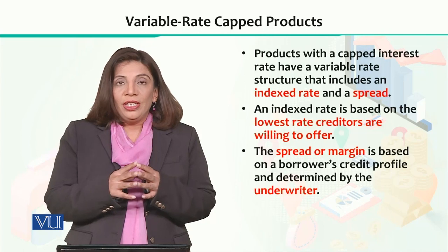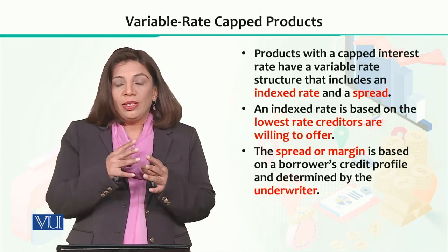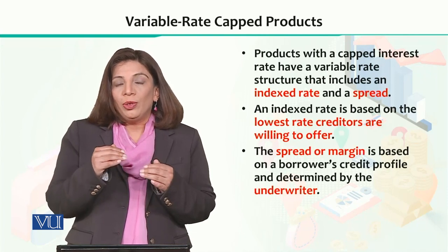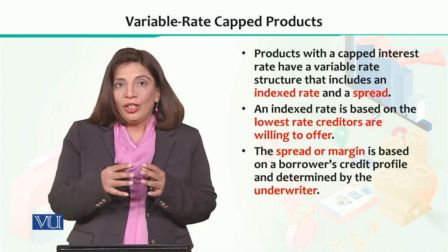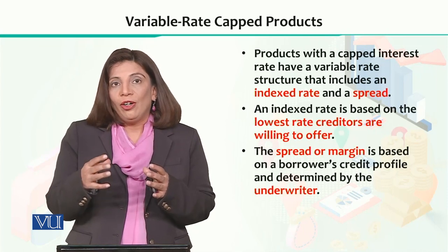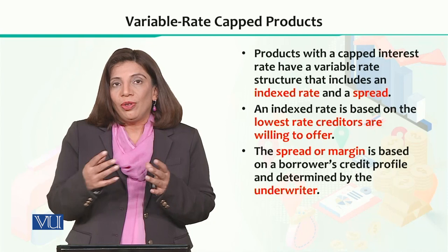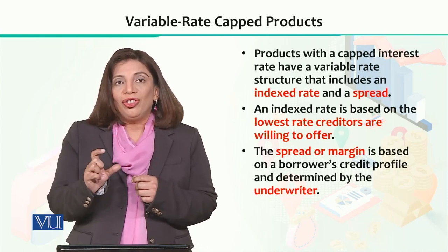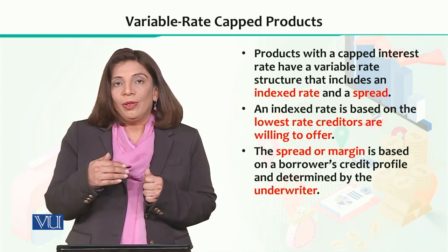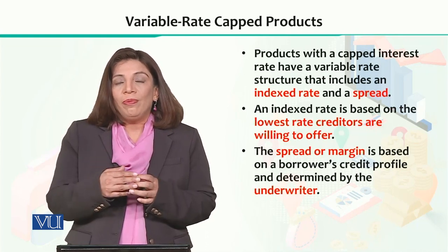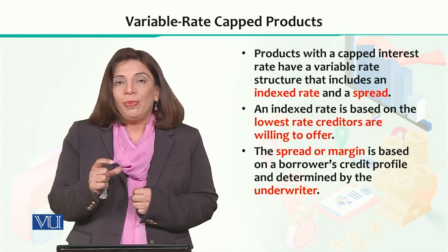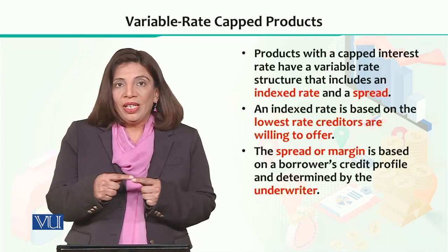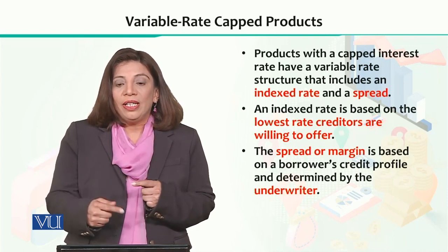The index rate is based upon the overall value which investors are willing to offer for a particular category of financial product. Then there is the spread or margin — the offerers of a financial instrument can say that the spread or margin can be plus or minus two, on top of that particular index rate which is considered as the benchmark.